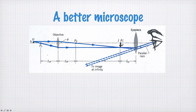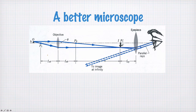So your eyepiece makes everything look like it comes from infinity. The action of this compound microscope is to give you some large amount of magnification — first through the objective, which gives you a larger image, and then the eyepiece, which again magnifies this real image from the objective.